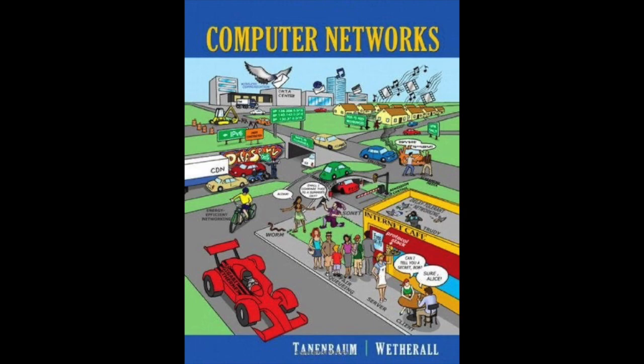The transport layer must provide some operations to application programs—that is, a transport service interface. Each transport service has its own interface. We will first examine a simple, hypothetical transport service and its interface to see the bare essentials, then look at a real example. The transport service is similar to the network service, but there are important differences. The main difference is that the network service models the service offered by real networks, warts and all, and is generally unreliable, while the connection-oriented transport service is reliable.